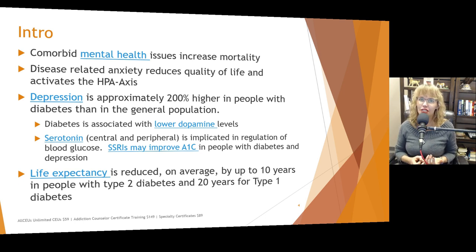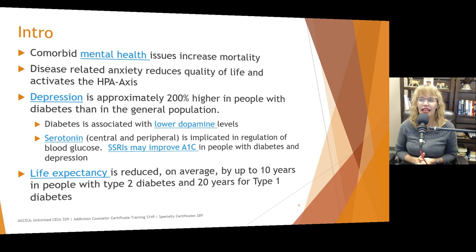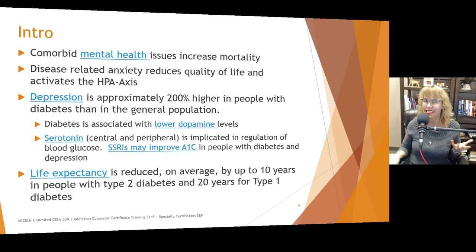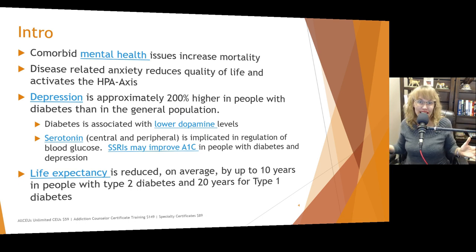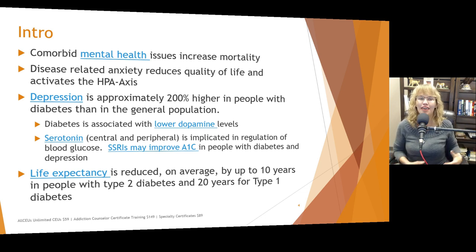Life expectancy is reduced in people with diabetes right now. They are making strides in treating diabetes, but current statistics indicate that people with type 2 diabetes have about 10 years reduced from their life, and people with type 1 diabetes have about 20 years reduced. The difference is likely because people with type 1 diabetes develop it much earlier in life, so they're living with it for much longer and it's taking a greater toll on their body.